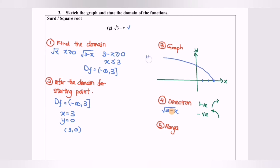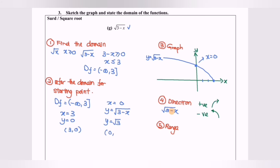So y equals square root of 3 minus x. Now we're going to determine an additional point. When x equals 0, substituting into the function, y will be equal to square root of 3. So the coordinate will be (0, √3).